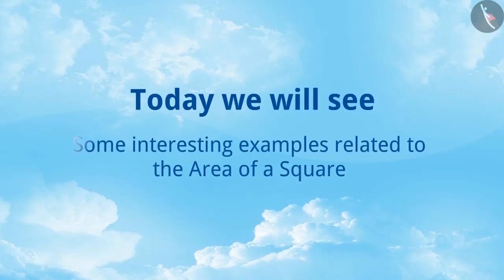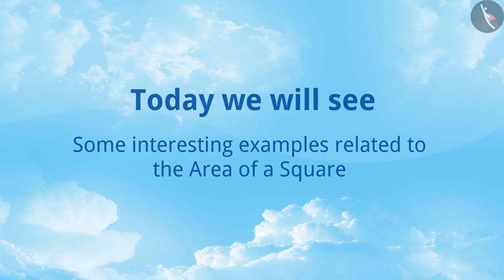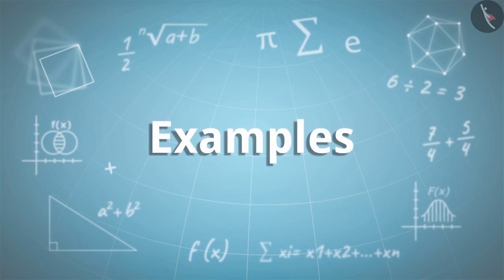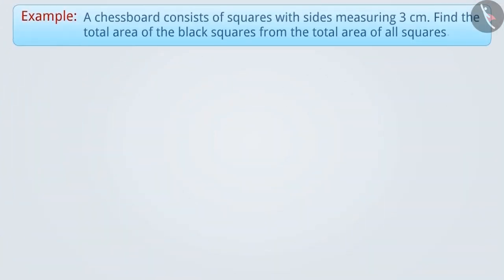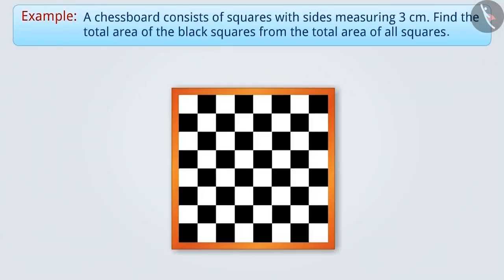Today, we will see some interesting examples related to the area of a square. A chessboard consists of squares with sides measuring 3 cm. Find the total area of the black squares from the total area of all squares.